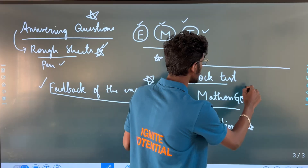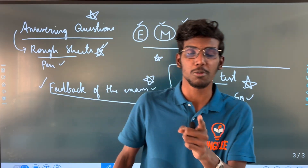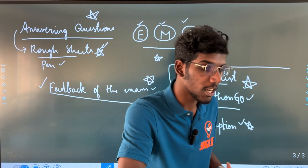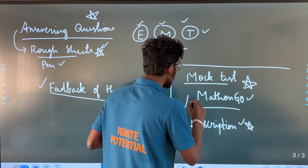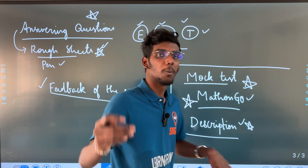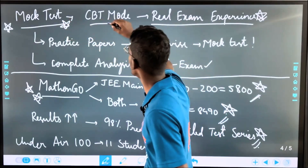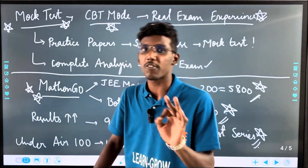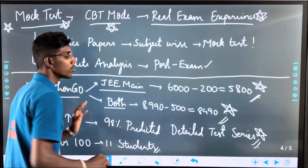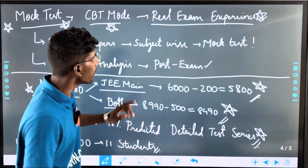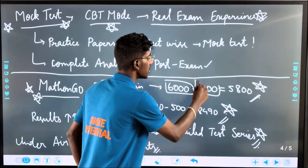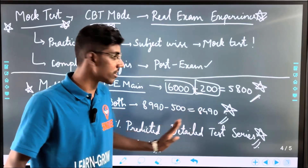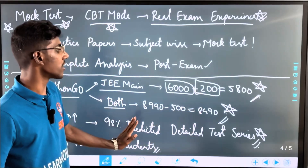The main thing is that the Mocktas platform link is in the description. Mocktas is a clear solution for exam practice. Mocktas CBT mode is available. This is a platform to get clear-cut exam practice. J-Main Mock Test series and J-Main Plus Advanced Mock Test series are available. J-Main is ₹6,000 with a ₹200 discount. Link in description — discount coupon code applied.